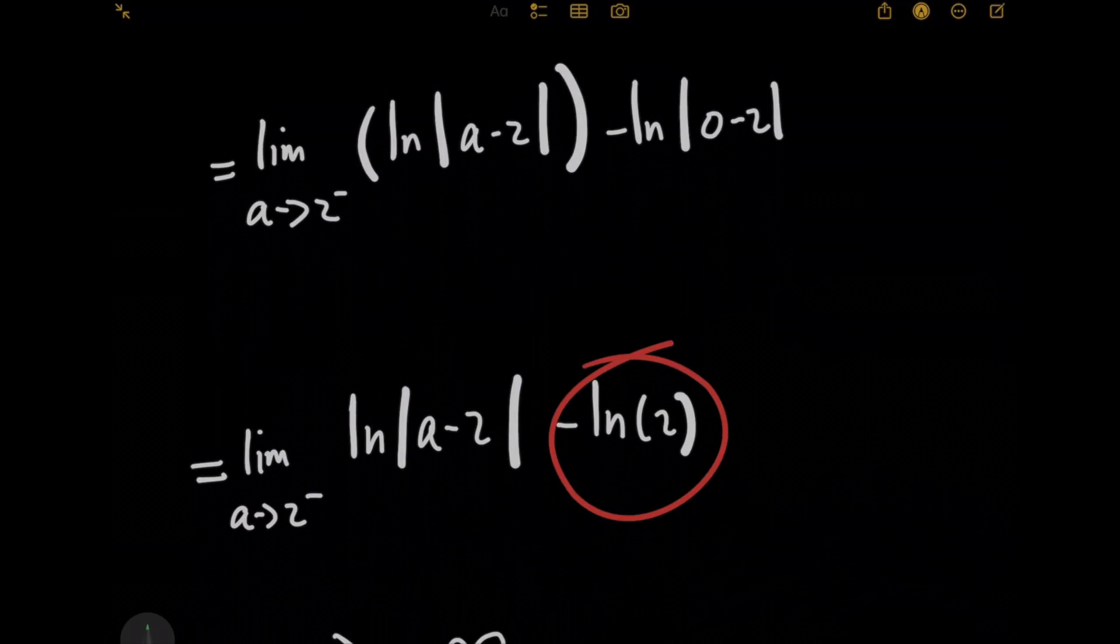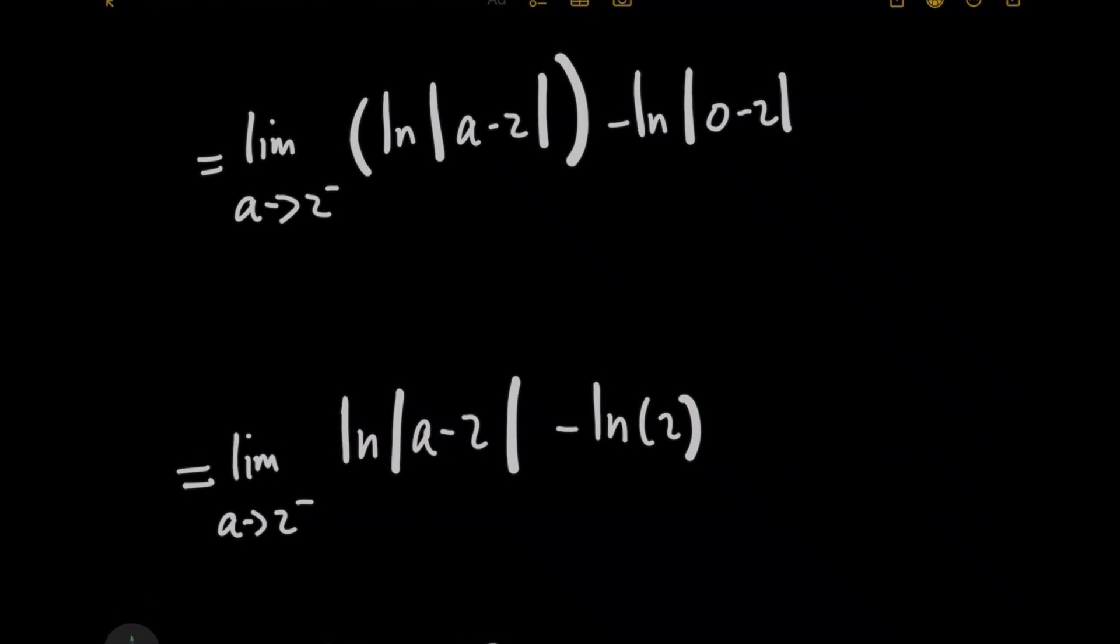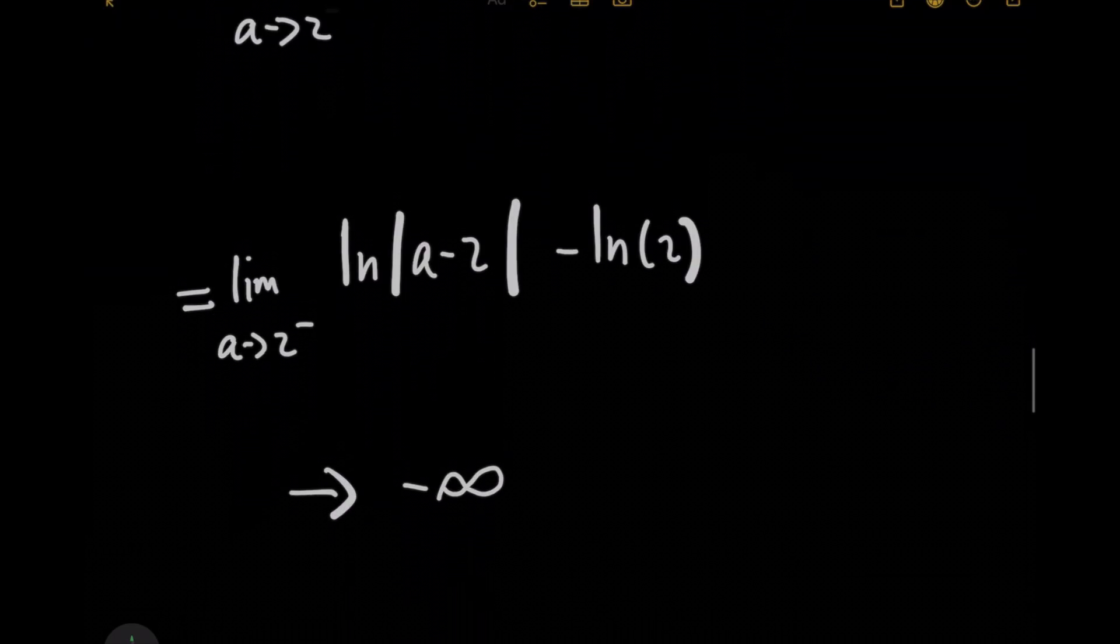But for this left part here, try some of those values now that are just under 2, like 1.9999, etc. When you take that value and you subtract 2 and take the absolute value of the result, this whole natural log is going to be growing really, really large and very negative. And so if you take that and you subtract it from a fixed constant, this whole thing is actually approaching negative infinity. So it's divergent.